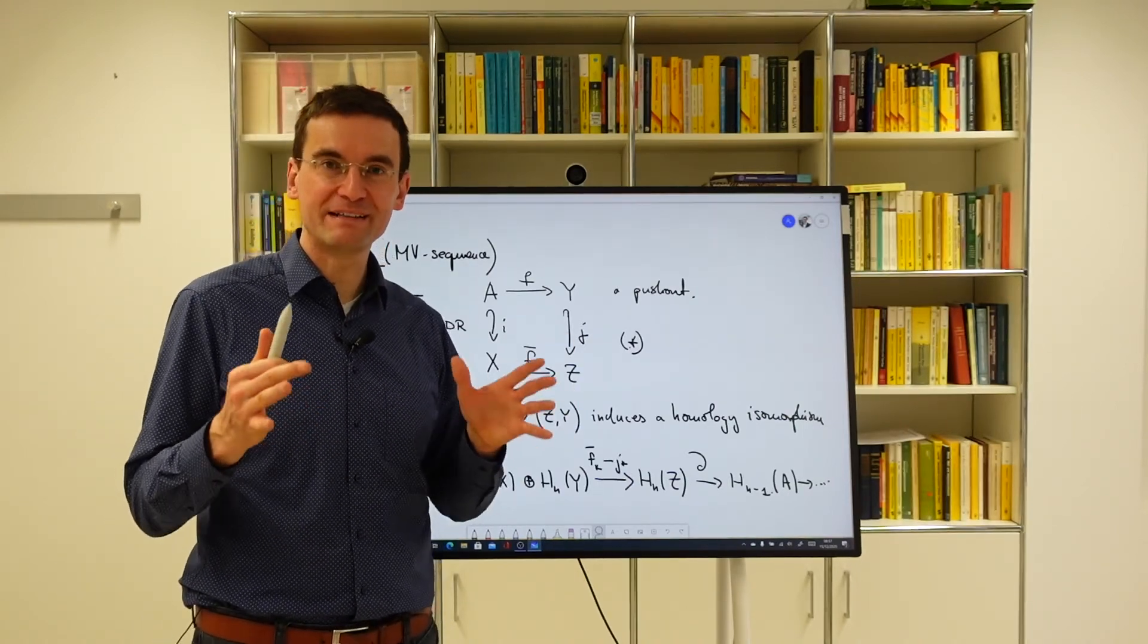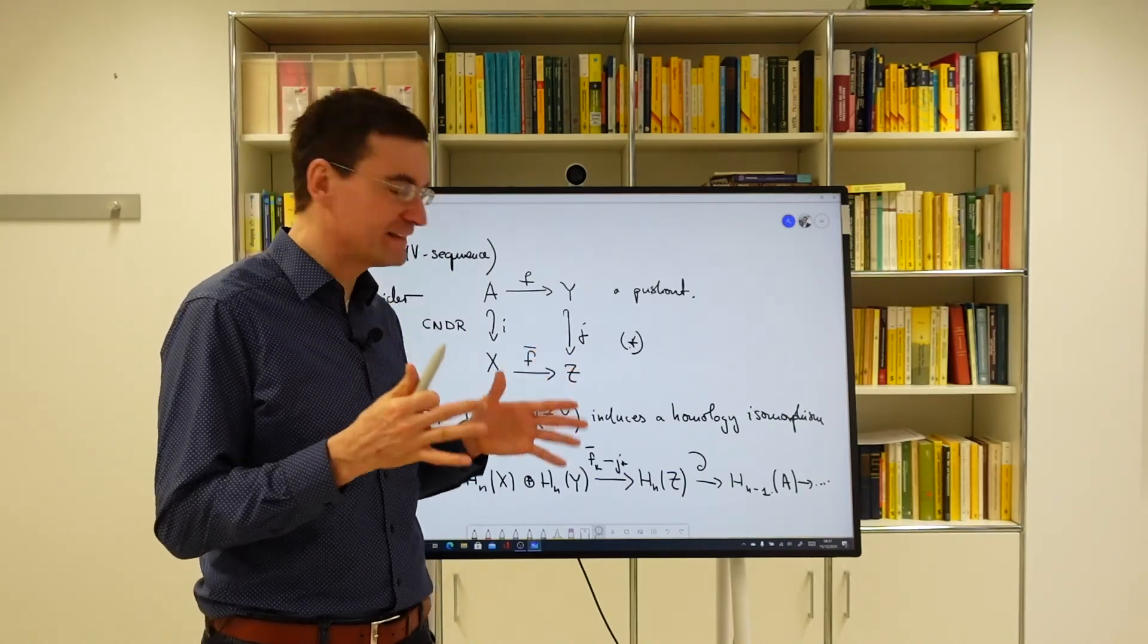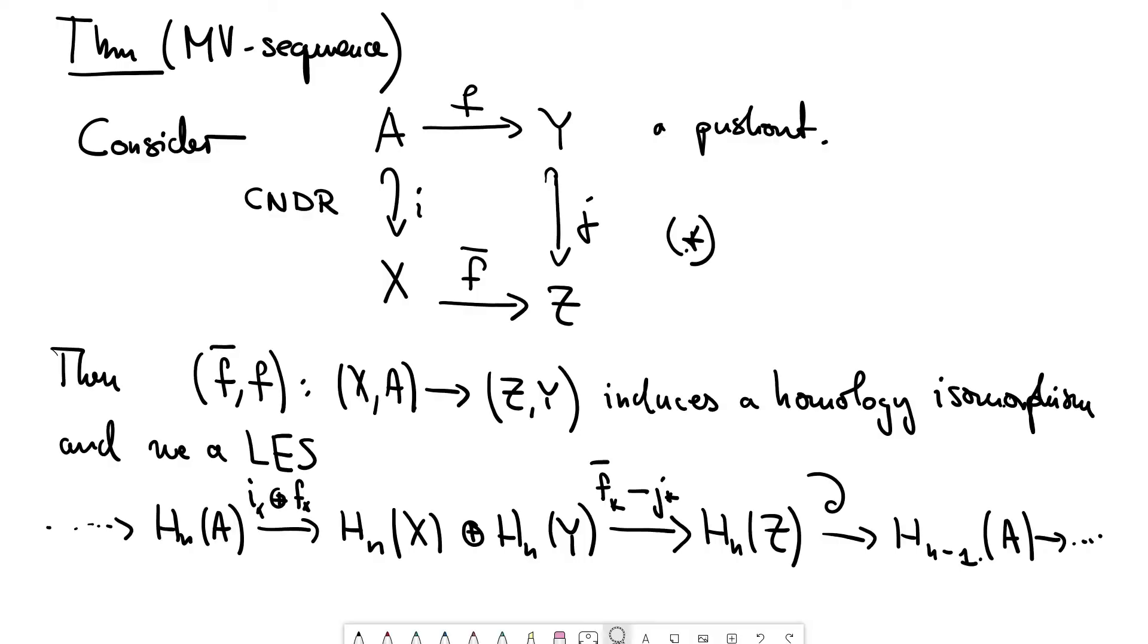They basically take this as the excision axiom. In our situation it's a consequence of the excision axiom of the Eilenberg-Steenrod formulation plus the long exact sequence. But this is really at the heart of excision, this homology isomorphism.